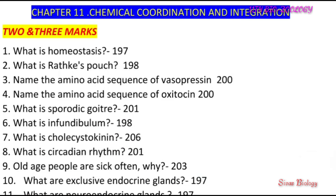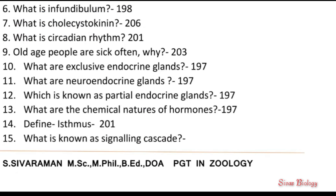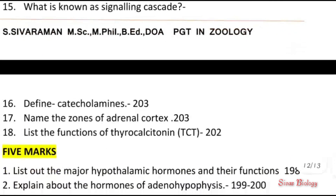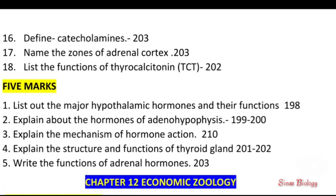Chapter 11 important questions: cholecystokinin, circadian rhythm, sporadic goiter, why old age people fall sick often. Chemical nature of hormones and types. Partial endocrine glands, signaling cascade. Three-mark: zones of adrenal cortex, functions of thyrocalcitonin. Five-mark: mechanism of hormone action, structure of thyroid gland, functions of adrenal glands.